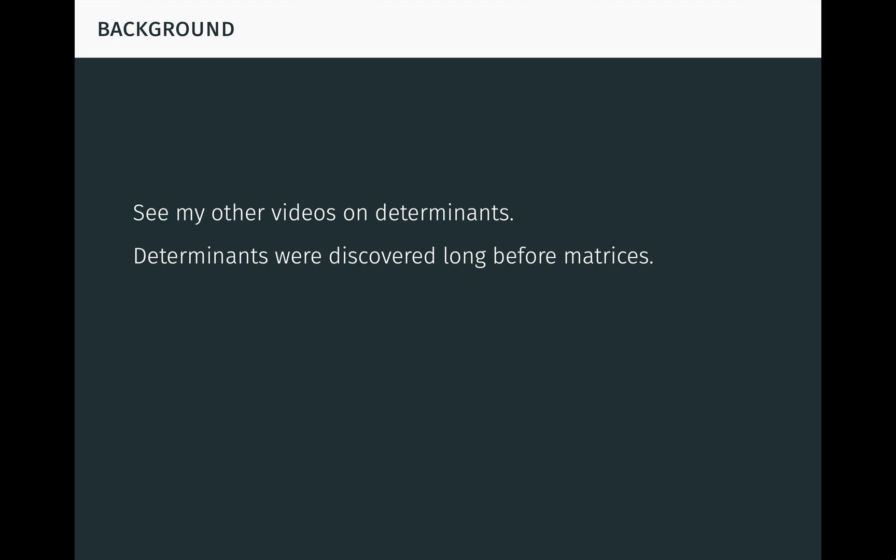In the first video we learned that historically, determinants were actually discovered long before matrices in connection with systems of equations, though there's a close connection between the two concepts today. From a modern geometrical point of view, we saw that determinants measure n-dimensional oriented volume, at least over the real numbers, although this intuition is still useful in guiding us to correct results in more general cases. The algebraic properties of determinants were seen to follow from the geometrical properties with this point of view.